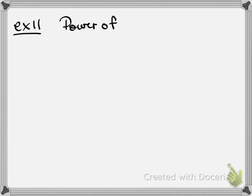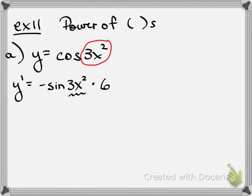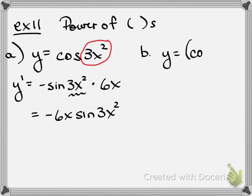Let's look at example 11 — this is the power of parentheses, how a little set of parentheses can change a whole problem. All four of these are super closely related. First: y equals the cosine of 3x squared. This is the cosine of something other than just x, so when we take its derivative it's the derivative of cosine of that thing times the derivative of the angle, giving us negative 6x sine 3x squared.